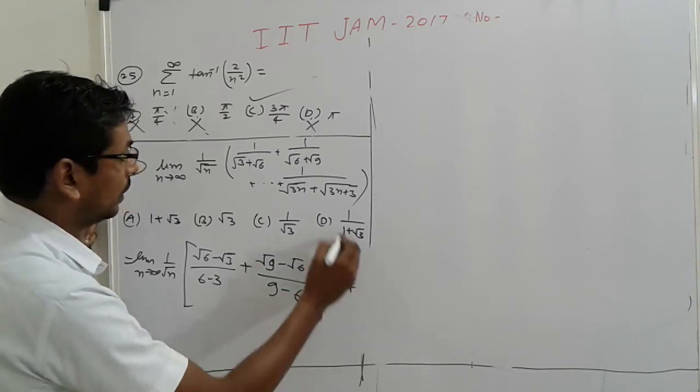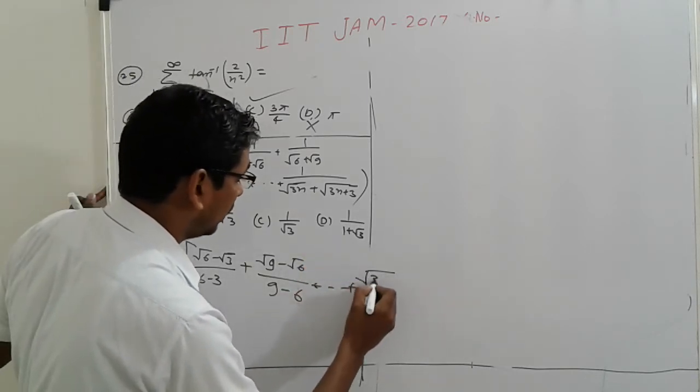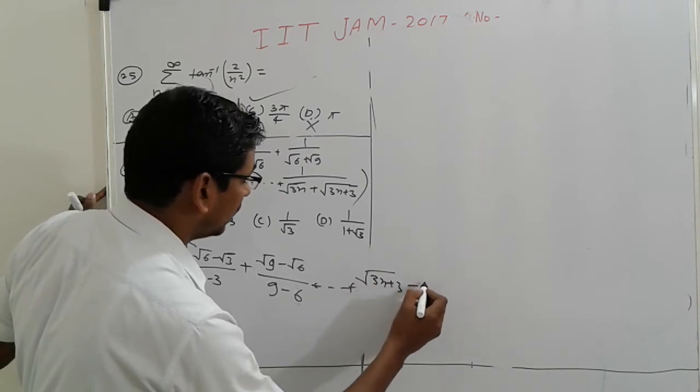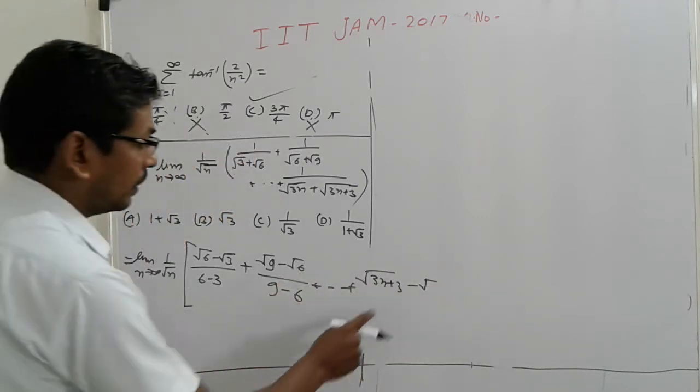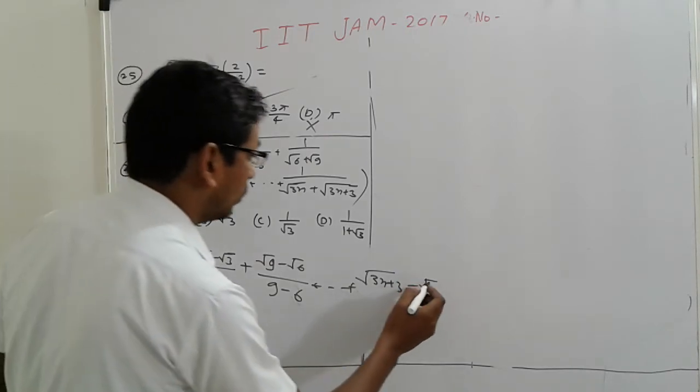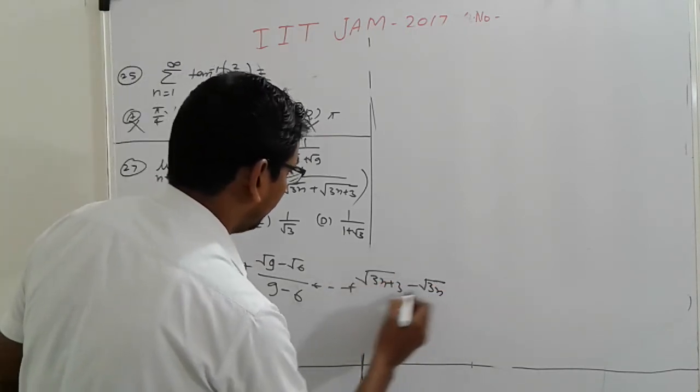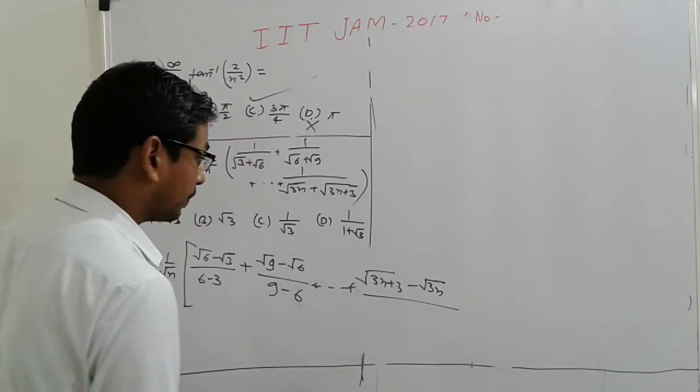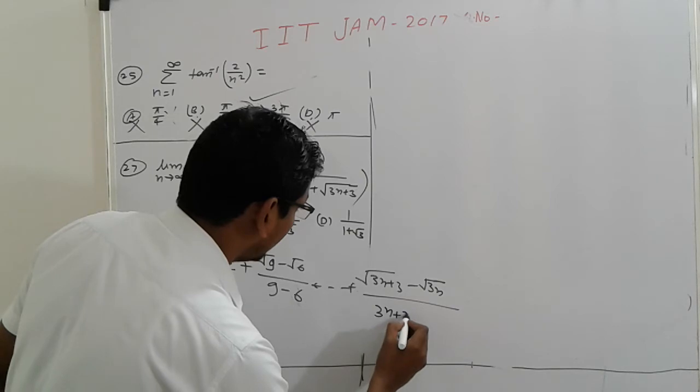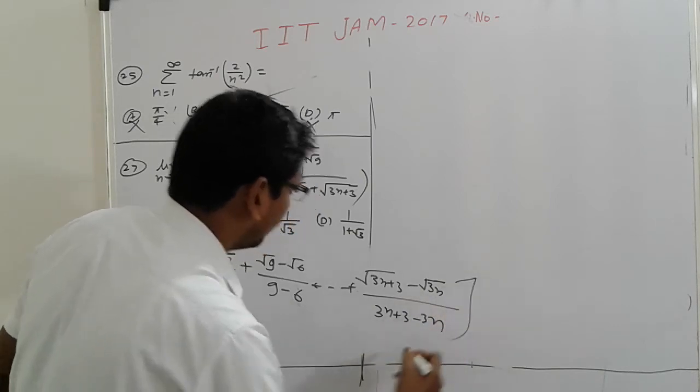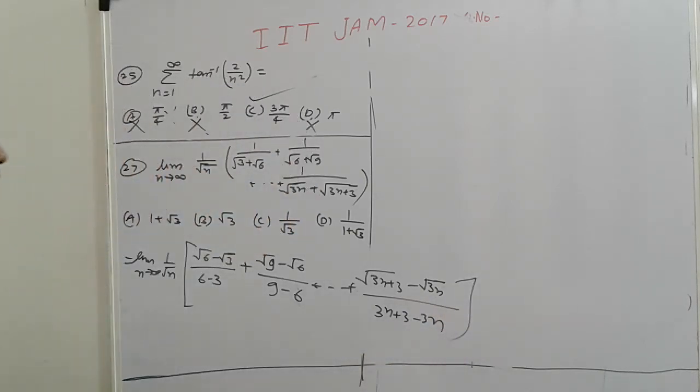Up to here: 3n plus 3 minus root(3n plus 3), 3n plus 3 minus root(3 minus 3n), divided by root(3n plus 3) minus 3n.